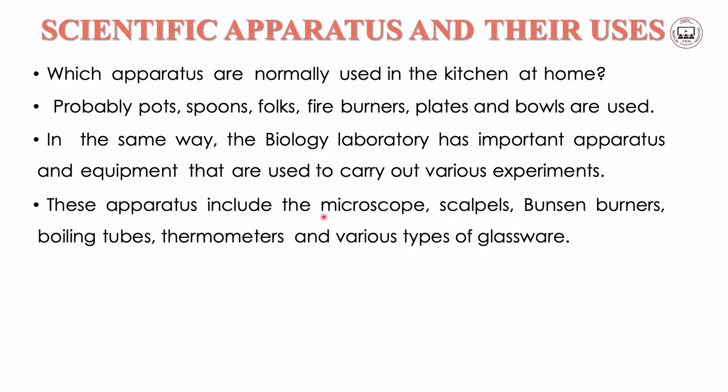The apparatus include microscopes, scalpels, Bunsen burners, boiling tubes, thermometers, and various types of glassware — all found in the laboratory. As a biologist, you should understand these apparatus, be able to draw them, and know the parts of each. Now I am going to bring you a table of laboratory apparatus and their uses.